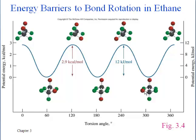Ethane prefers staggered arrangements because that keeps the hydrogens on the front carbon a little bit further away from the hydrogens on the carbon in back. We want to be able to recognize and distinguish what's eclipsed versus what is staggered, and just know that staggered is more stable. The actual energy numbers don't matter — we just want to know staggered is preferable for a molecule if it can manage it.